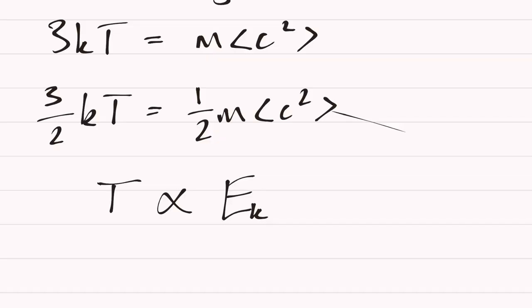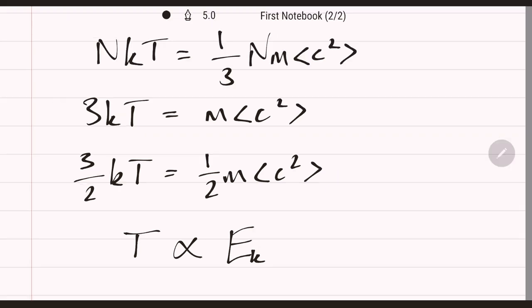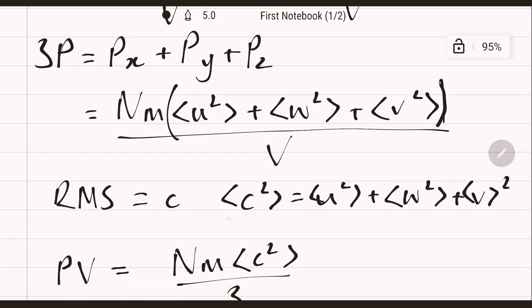That is one of my least favourite derivations in all of physics, because of the confusing part where you think about all the different dimensions. But you just need to be able to express that the mean square speed is the sum of the squared speeds in all the different directions.